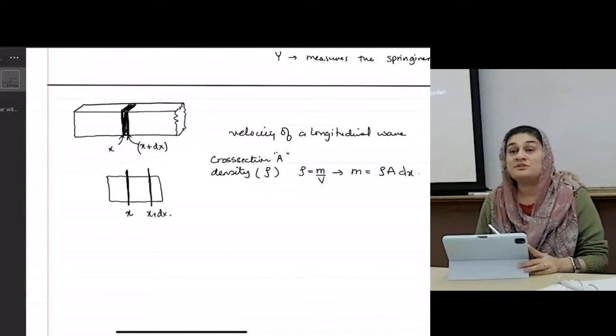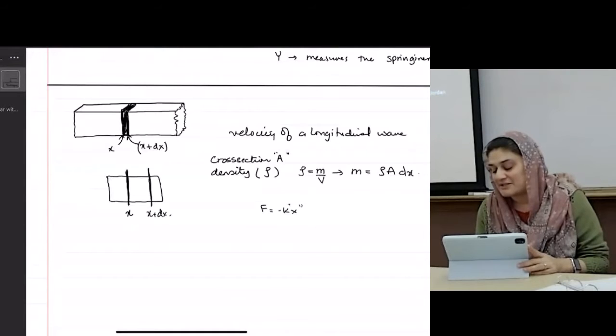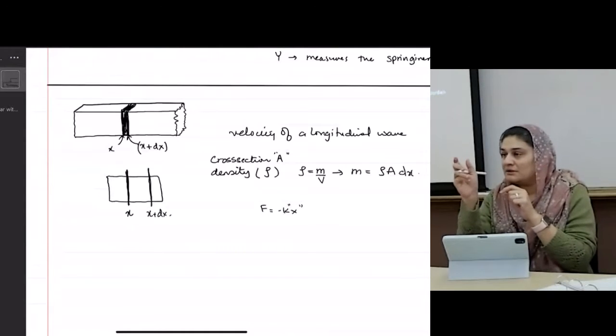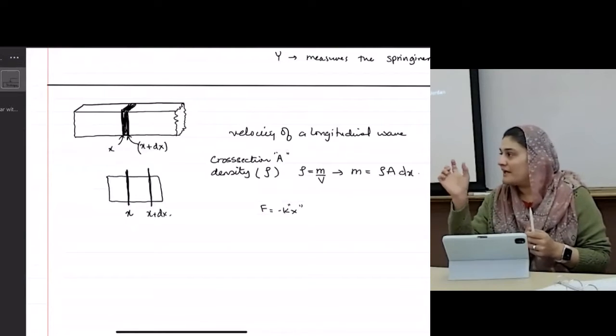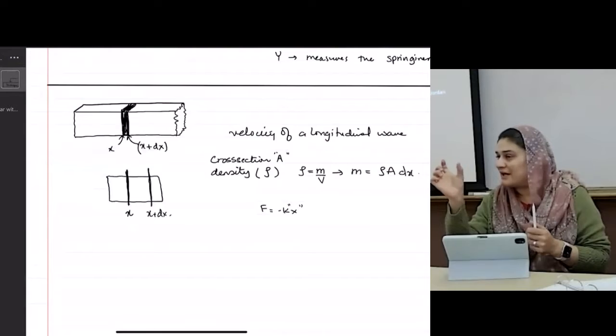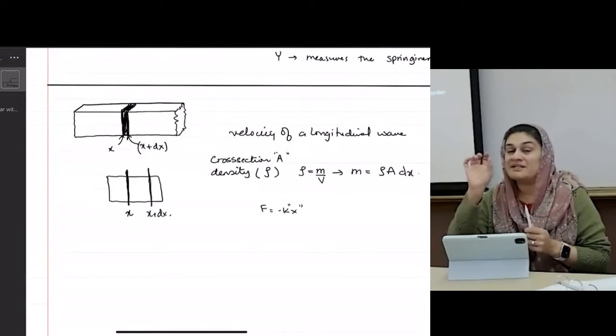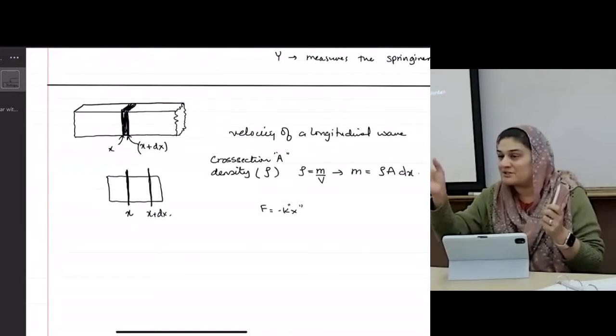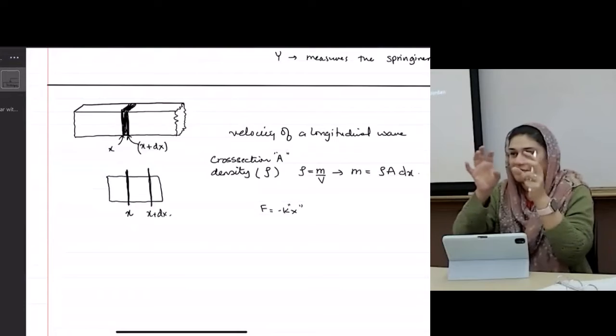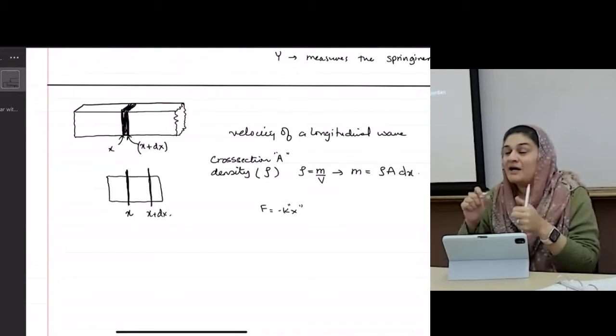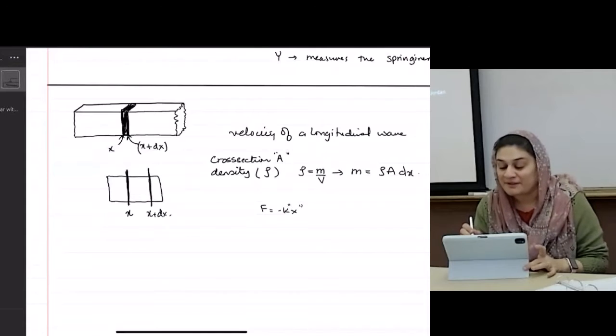Do you remember when we do springs, we say f equals minus kx, where x is a small... Everybody remember Hooke's law, right? For a spring, where x is a small distance that that Hooke's law moves. So if you have a solid, it's basically a bunch of molecules that are joined together. As the wave passes by, the molecules move back and forth in their positions.